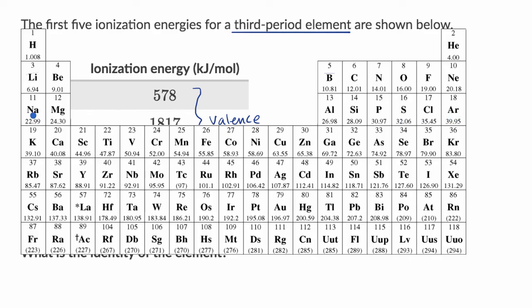Well, sodium has one valence electron. Magnesium has two valence electrons. Aluminum has three valence electrons. So one way to think about it is that first electron, it's a reasonable ionization energy.